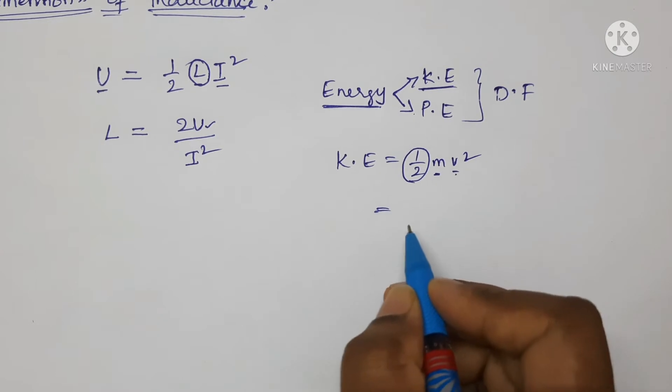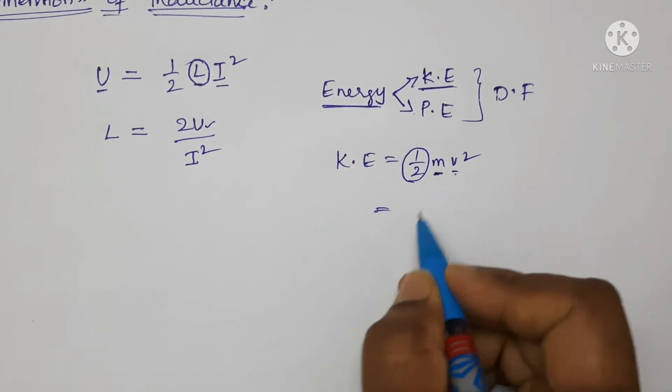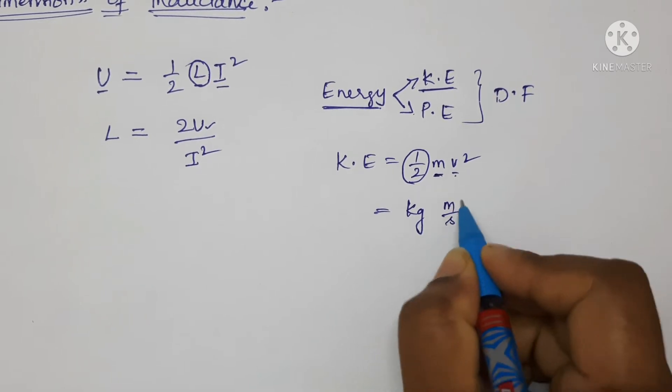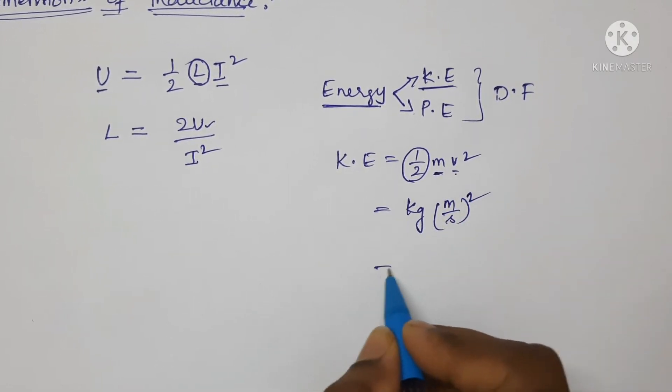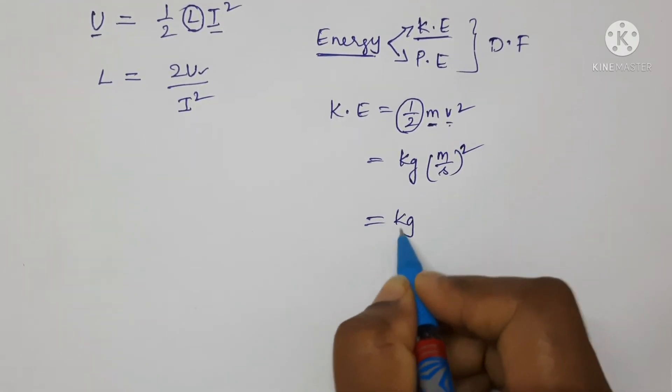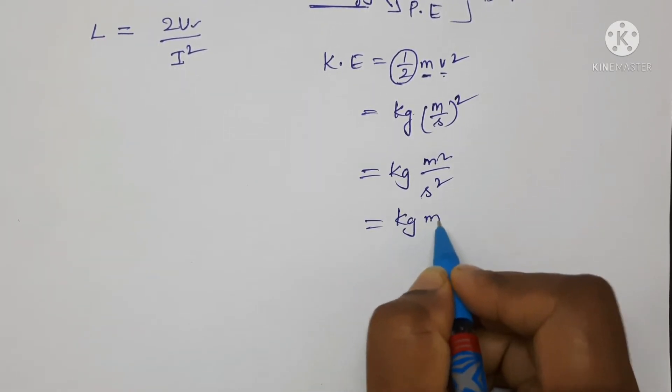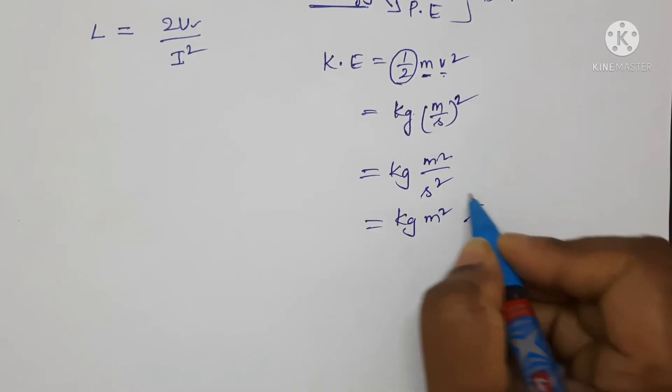For mass, kilogram, and for velocity, meter per second. Since there's a square, the whole is squared: kg times (m/s)². Separate the square for both terms, then simplify: kg meter squared per second squared. Write this on the numerator as s to the power of minus 2.